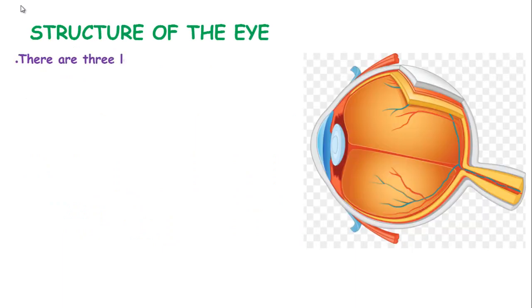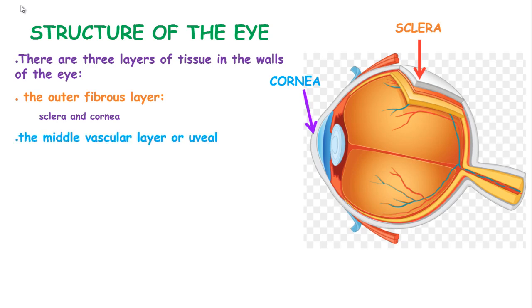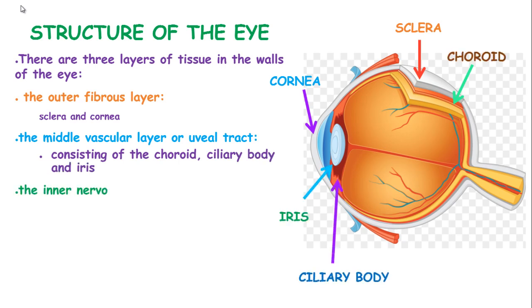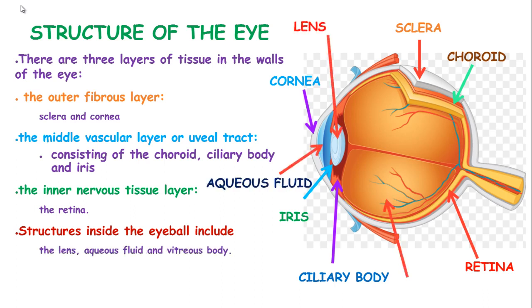The structure of the eye. The eye has three layers of tissue in the walls. The outer fibrous layer is composed of the sclera and the cornea. The middle vascular layer, or the uveal tract, is composed of the choroid, ciliary body, and the iris. Then we have the inner nervous tissue, which is composed of the retina. The structures inside the eyeball include the lens, aqueous fluid, and vitreous body.